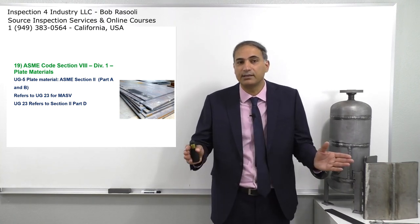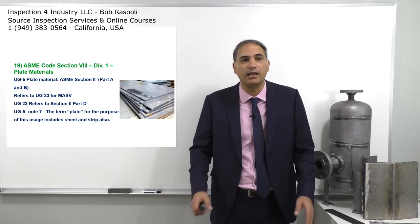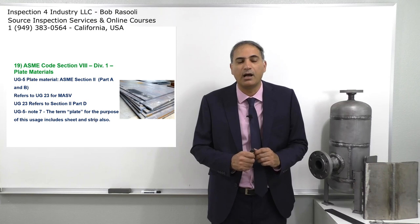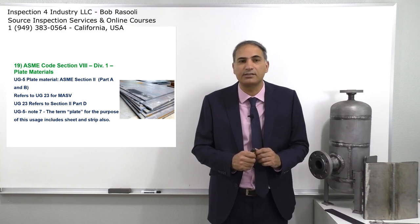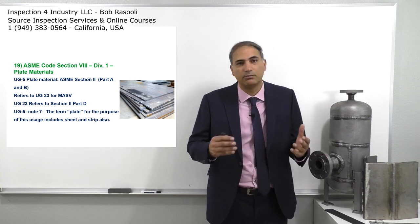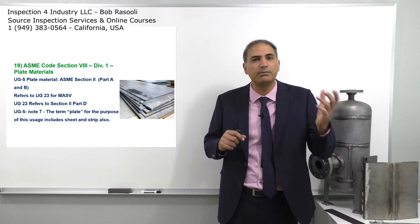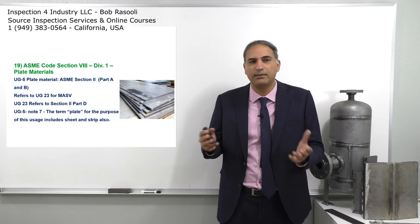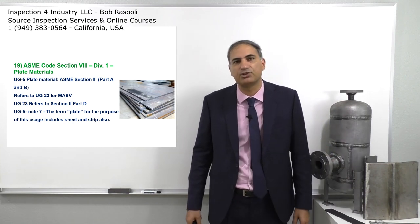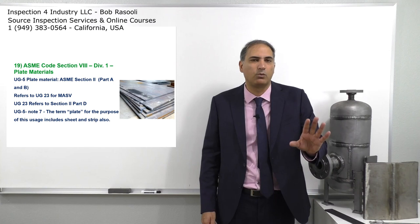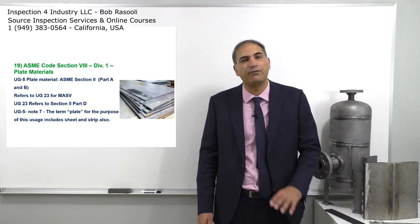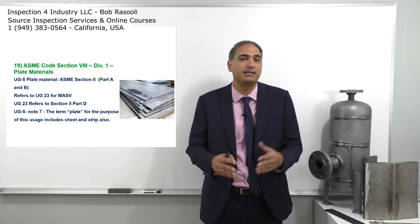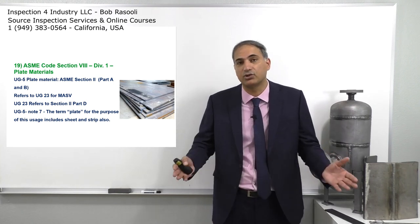UG23 refers you to Section 2 Part D as indicated, and there is a note in UG5 that says the term 'plate' for purposes of this code includes sheets and strips as well. Up to a certain wall thickness it's called a plate, and below a certain value it's called a sheet. This is extra information — and it has come up as an exam question: sheets are indeed included as ASME material requirements.